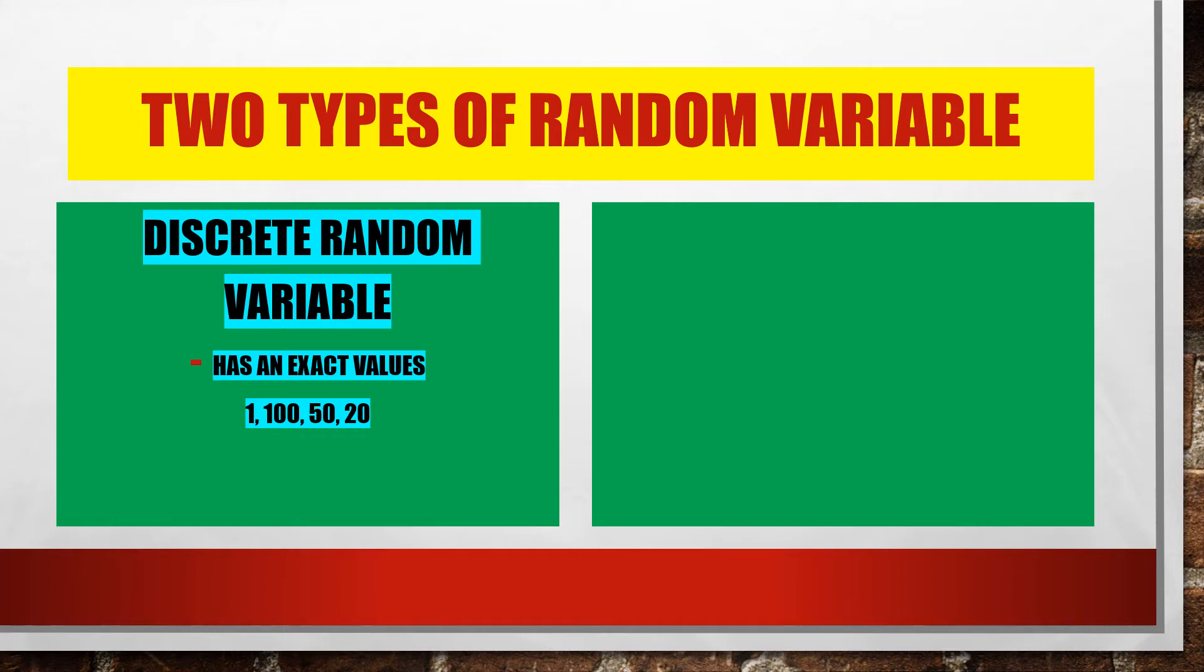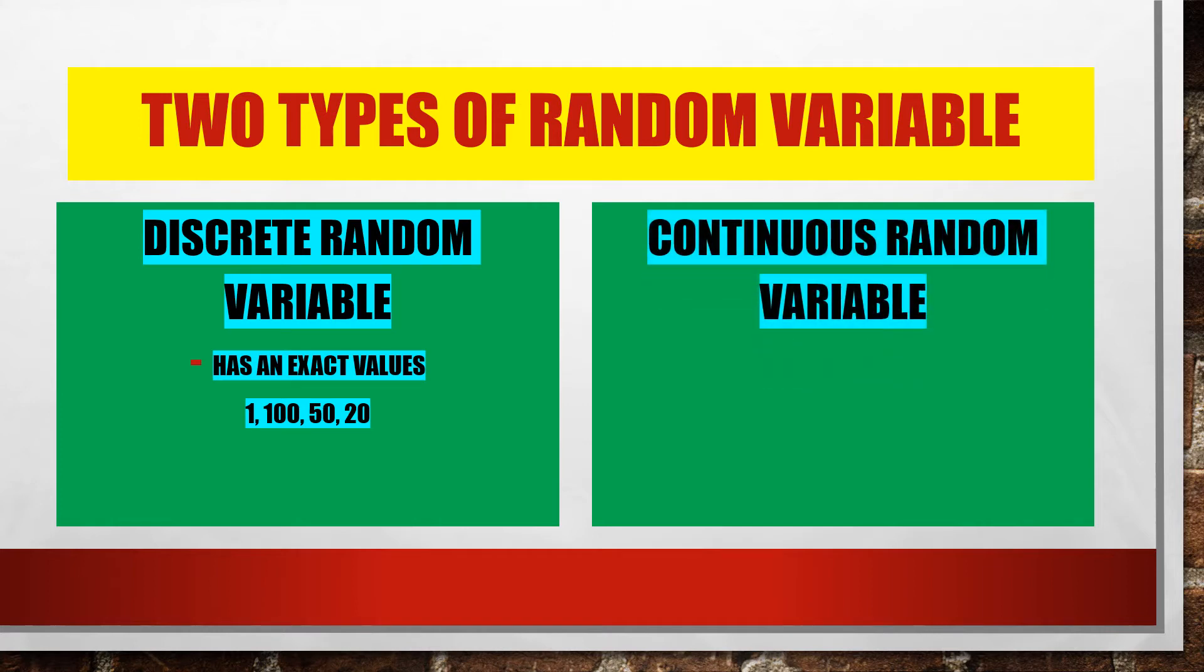We also have the second type of random variable, which is continuous random variable. For discrete, we have exact values. Therefore, if we talk about continuous random variable, values are not exact. So they are opposites.